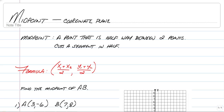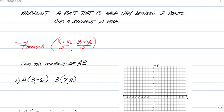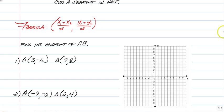Alright, here we go with a video on midpoints on a coordinate plane. So a midpoint is a point that is halfway between two points, and what it does is it cuts a segment in half. Now for a coordinate plane, there's a couple of different ways to find the midpoint of two points.